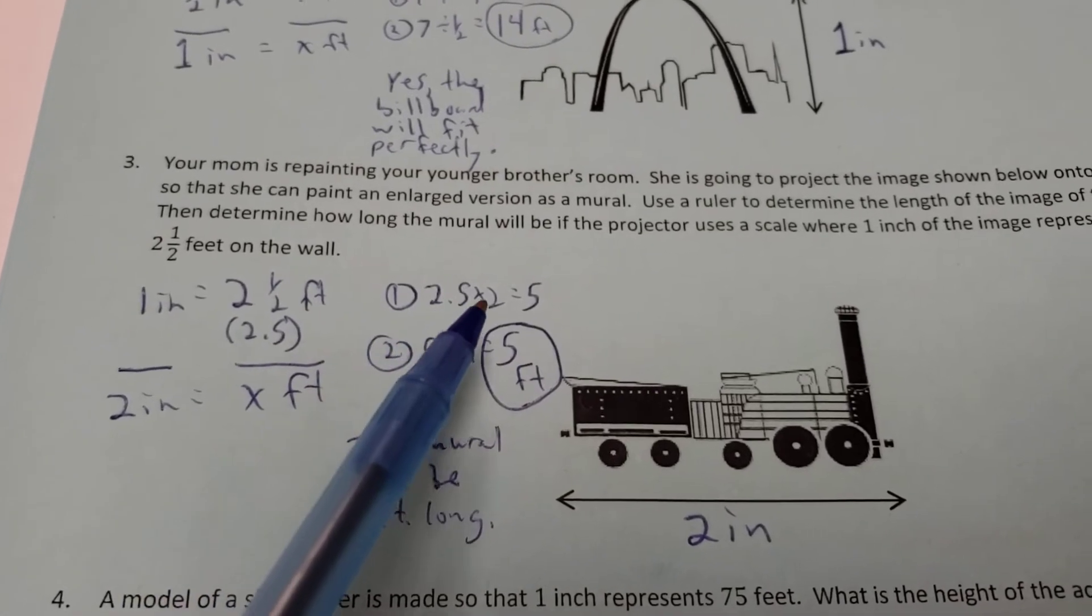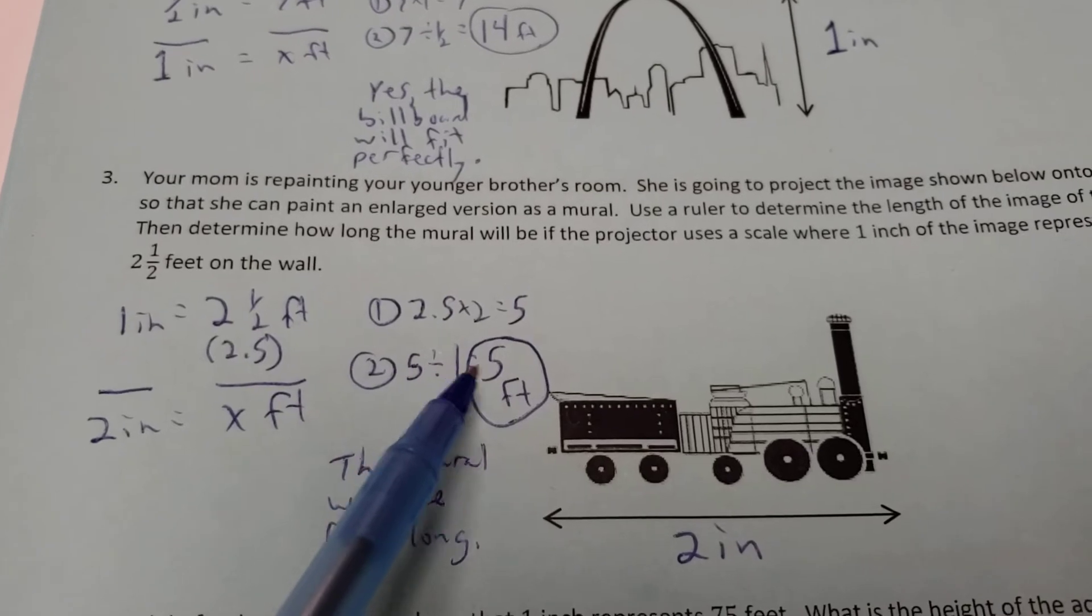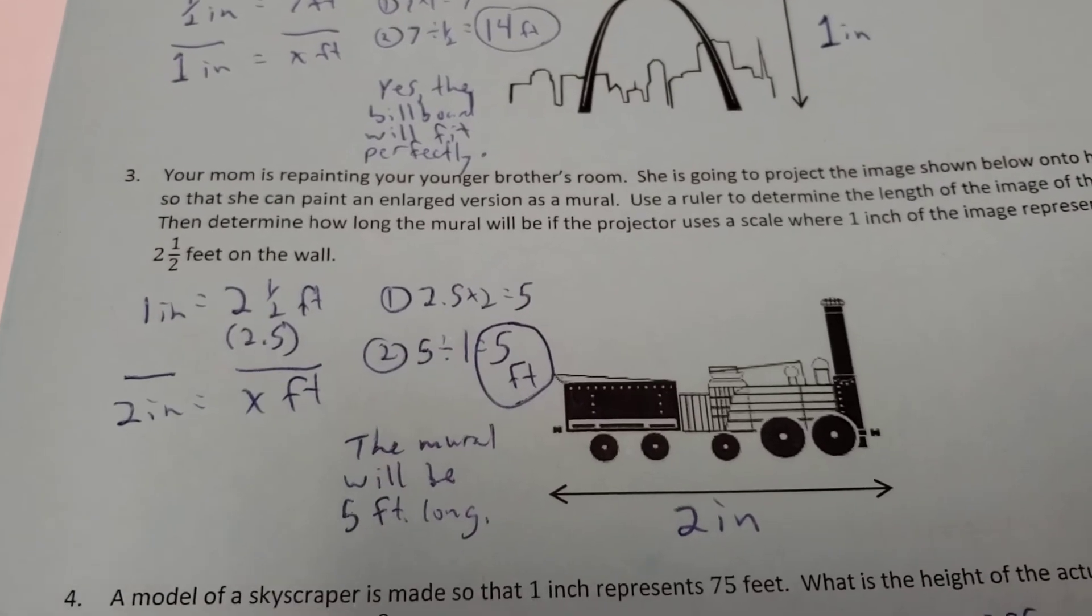Well, two and a half, or 2.5 times two, gives you five. And then five divided by my leftover number, five divided by one is five. So that mural is going to be five feet long.